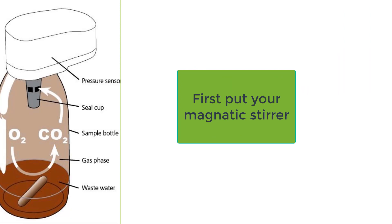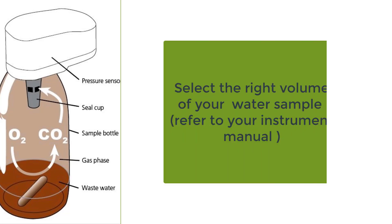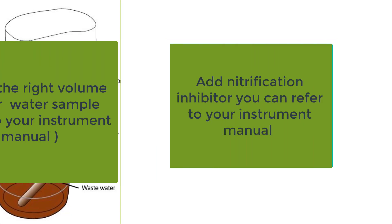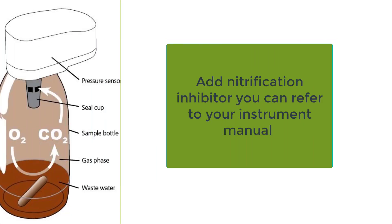When you start your BOD analysis, the first thing you need to do is put in a magnetic stirrer, as this is very important and you might forget it later on. Then select the right volume of your water sample by referring to your instrument manual. The next step is to add the nitrification inhibitor — refer to your instrument manual as well.